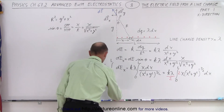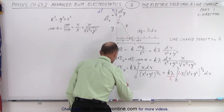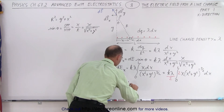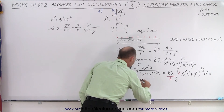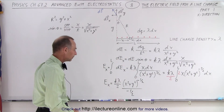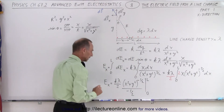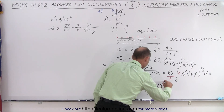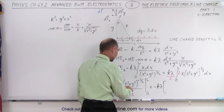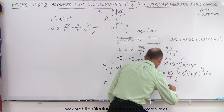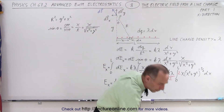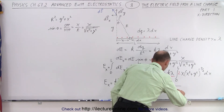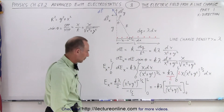Integrating, Ex equals K lambda divided by 2. The 2X dx disappears and we add 1 to the exponent: X squared plus Y squared to the minus 1/2, divided by the new exponent minus 1/2, evaluated from 0 to L. Notice that the 1/2 factors cancel, but the negative sign does not. Rewriting with positive exponents, this becomes negative K lambda times 1 over the quantity X squared plus Y squared to the 1/2 power, evaluated from 0 to L.